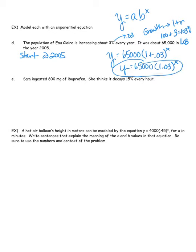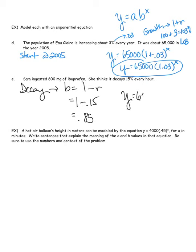What if it's decaying? Sam ingests 600 milligrams of ibuprofen and it decays 15% every hour. This is decay, not growth, so the multiplier is 1 minus the rate: 1 − 0.15 = 0.85. That means 85% of the medication remains every hour. The equation is y = 600 × 0.85^x.